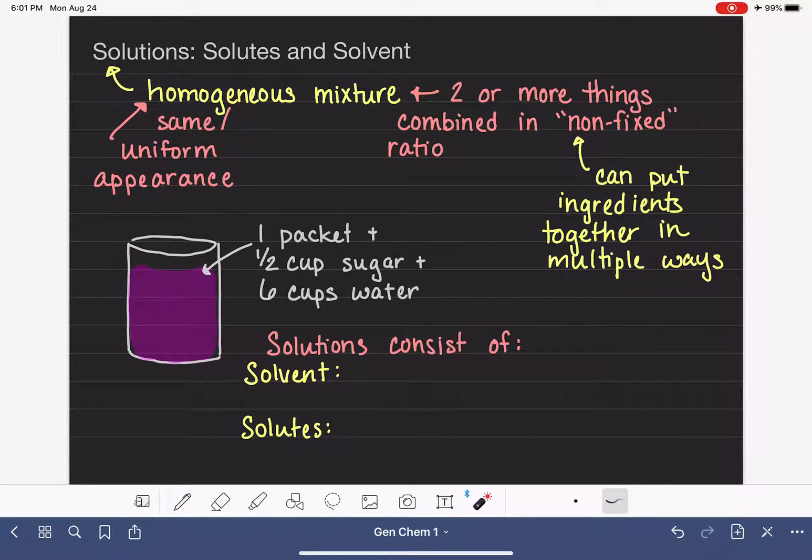So it doesn't matter what you're combining together, like a packet of Kool-Aid and sugar and water. One of these components is going to be classified as the solvent, and the rest of them are going to be classified as the solutes.